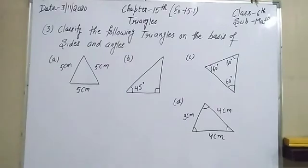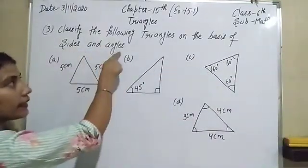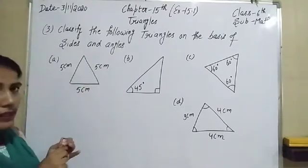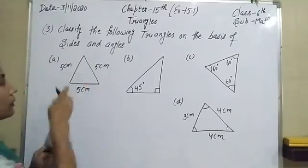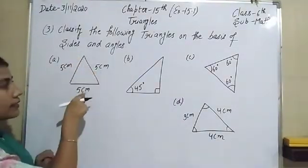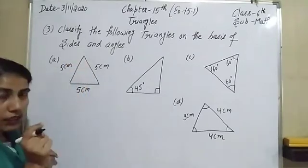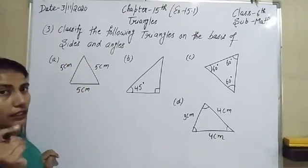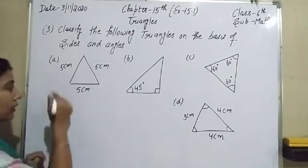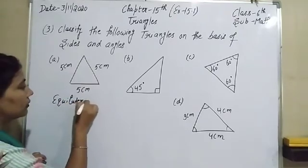Now the next question of this worksheet is: classify the given triangles on the basis of sides and angles. In the first figure, all three sides of the triangle are 5 centimeters each — all sides are equal. If all sides of a triangle are equal, that is called an equilateral triangle. So the first part is equilateral triangle.